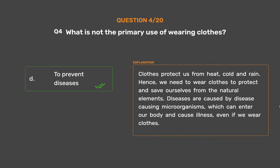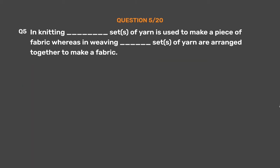Clothes protect us from heat, cold and rain. Hence, we need to wear clothes to protect and save ourselves from natural elements. Diseases are caused by disease-causing microorganisms which can enter our body and cause illness, even if we wear clothes. So the correct answer is Option D, To prevent diseases.